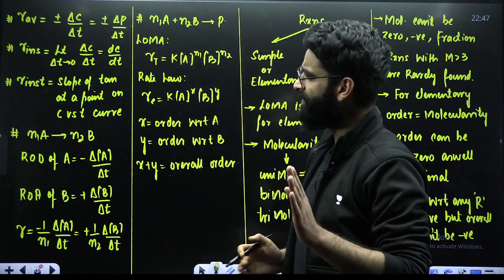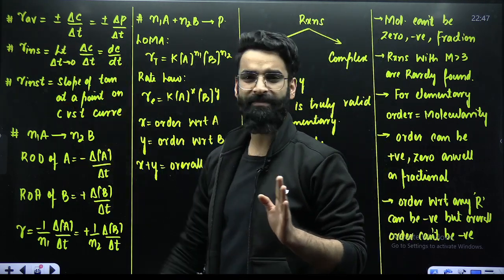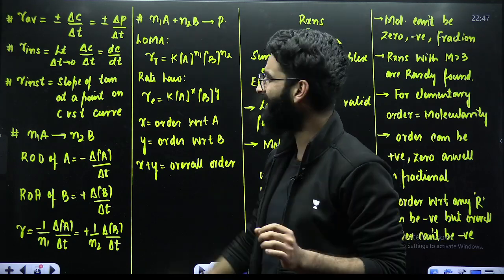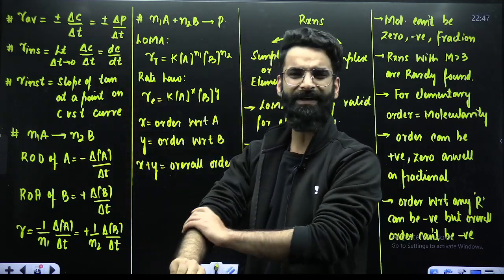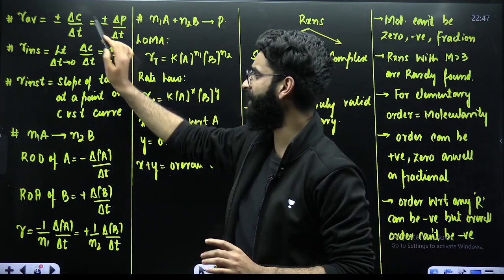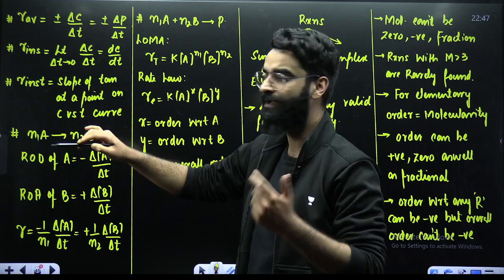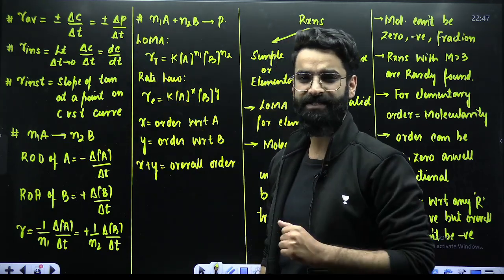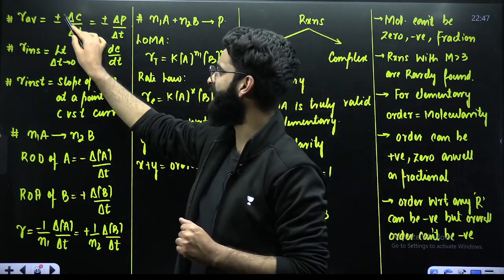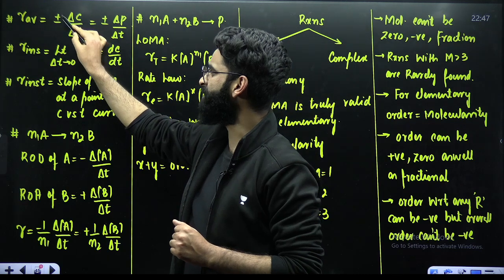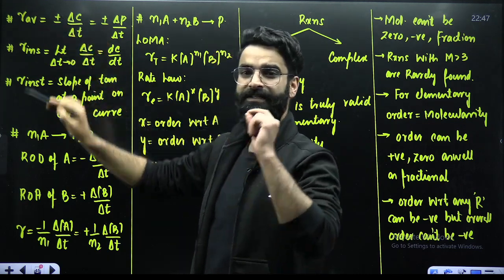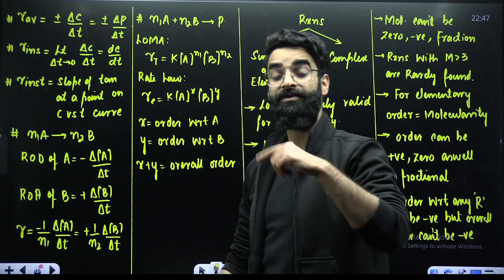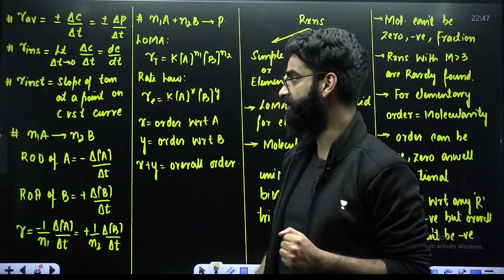The first thing we discuss in chemical kinetics is the average rate of reaction, which is defined as change in the concentration of either reactants or products divided by time interval, or change in the pressure of either reactants or products divided by time interval, with a plus or minus sign. Plus means the concentration of product increases with time; minus indicates concentration of reactant decreases with time.